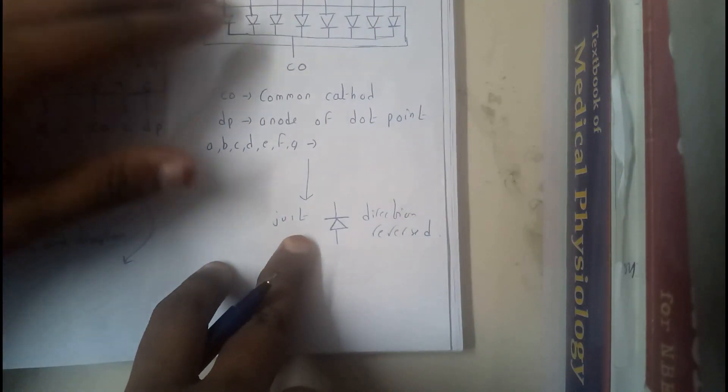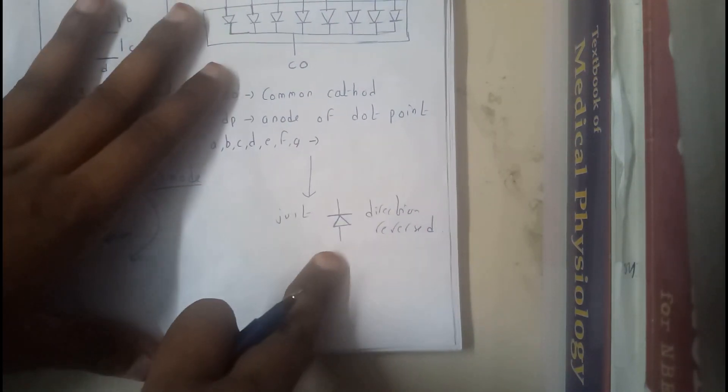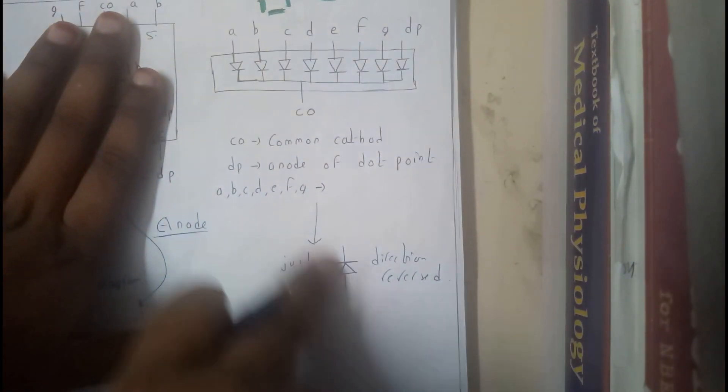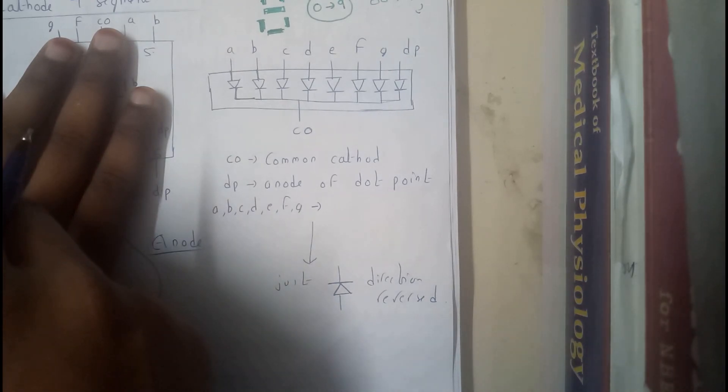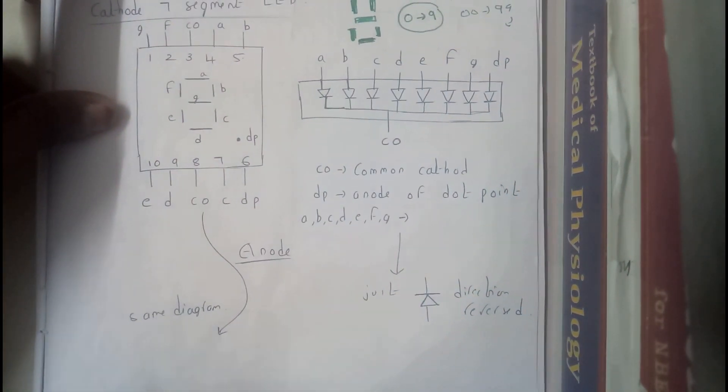Anode seven segment: the diagram of the first pin configuration is exactly same, where the internal connections, this is completely reversed. That is flipped, so that we'll be getting a symbol like this. So in place of these symbols we'll be having these symbols. That's the only difference from common cathode to common anode.